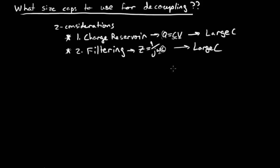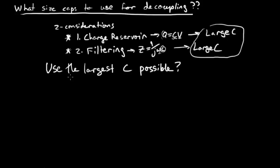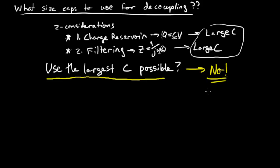If you look at these two considerations, they both indicate that we want a large capacitance. So wouldn't we just put the largest capacitor in this circuit that we can? The answer is a definite, most emphatic no — not necessarily. The reason has to do with the package parasitics and the capacitance. If it was an ideal capacitor, then yes, you'd want to use the largest capacitance possible.